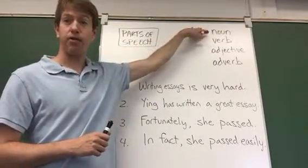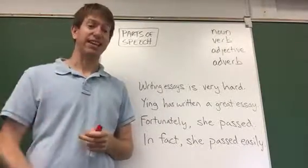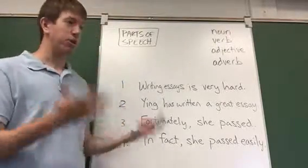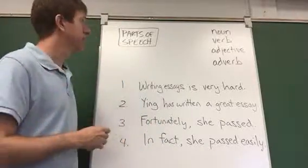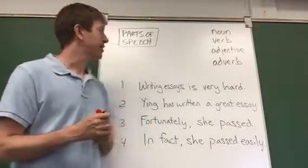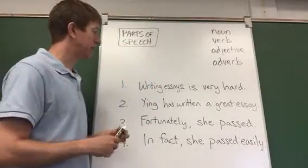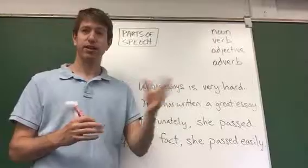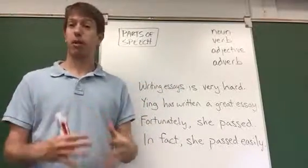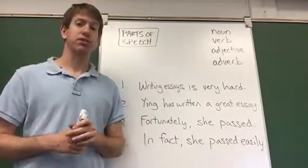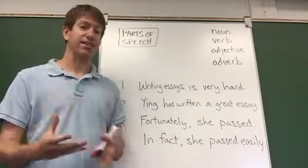So a noun is often described as something that names a thing. It could be a person, could be an object, could be an idea, could be a place. In a sentence, grammatically speaking, it's going to appear as a subject, as an object, or as an object of a preposition and in some other positions as well, but it's the kind of word that can appear as a subject.